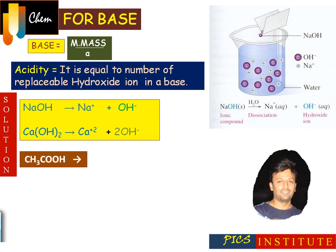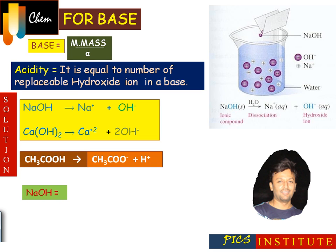For acetic acid, we can see there is 1 OH group, but on ionization it does not give an OH ion — hence acidity is 0 — since it gives an H⁺ ion, so it possesses basicity. The equivalent mass of NaOH is molecular mass divided by acidity, which is 1, hence its equivalent mass is the same as its molecular mass.